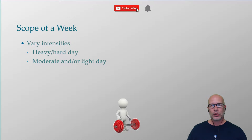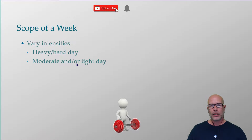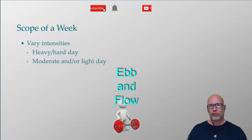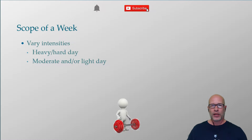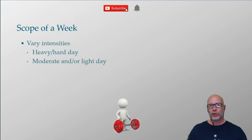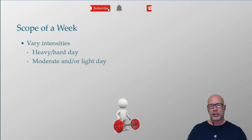How each session fits into the scope of a week really means two things. First, intensity: you don't want to always go heavy, and you don't always want to go light. You want to ebb and flow throughout the course of a week. For example, if you're training each major muscle group twice per week, you want a heavy day and a light-to-moderate day. If it's three times per week, you might have a heavy day, a moderate day, and a light day.